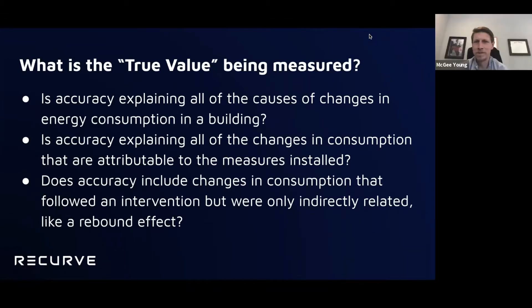B, explaining all of the changes in consumption that are attributable to the measures installed? I don't know what C is. Oh yeah. Does accuracy include changes in consumption that followed an intervention but were only indirectly related, like a rebound effect? So this would be like number two, part B. Is accuracy explaining all the changes of consumption in the first place, but what about indirect changes in consumption? Or is it just number one? Or is it none of the above? I throw it out to you all.